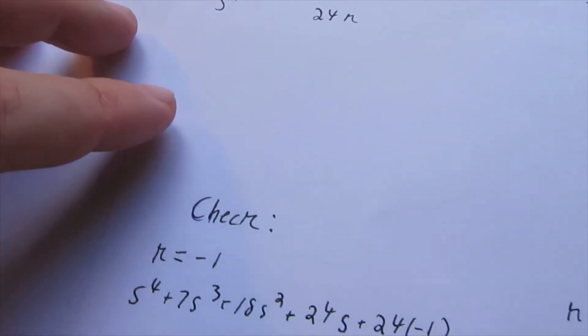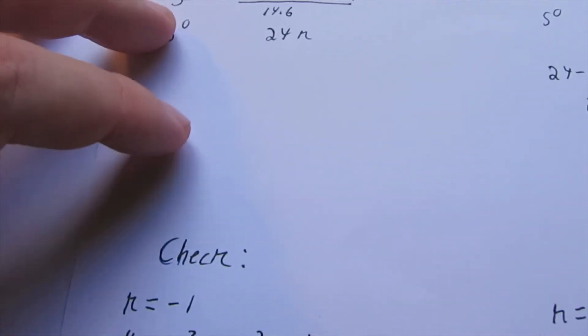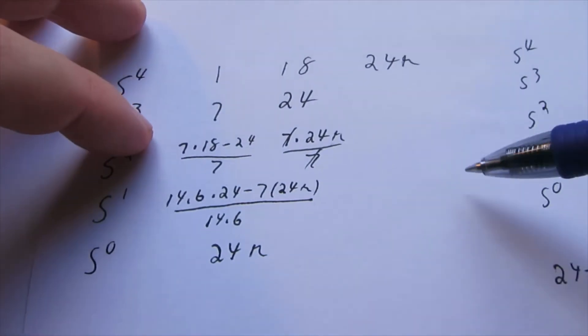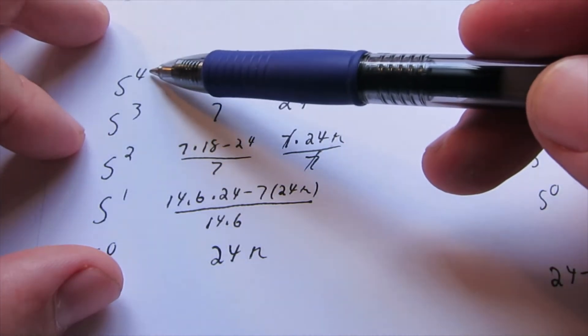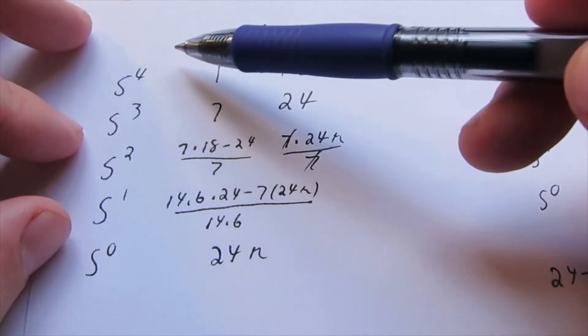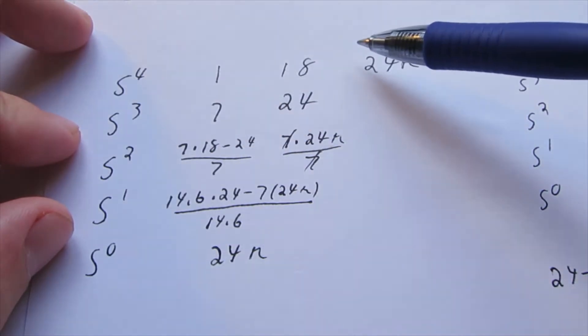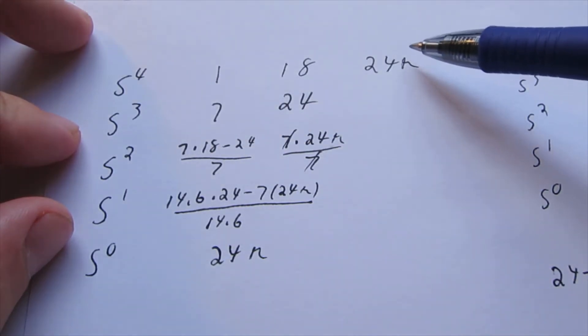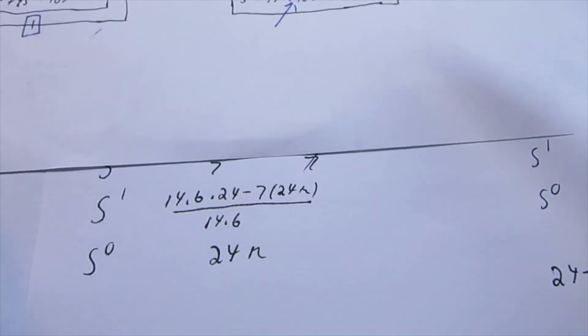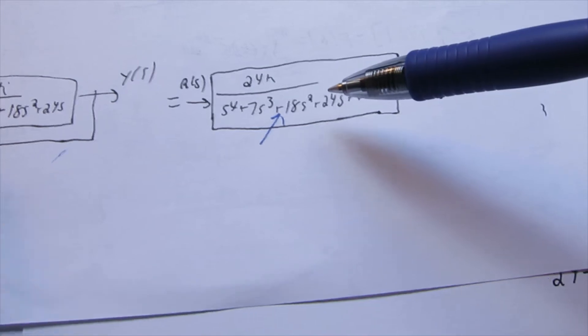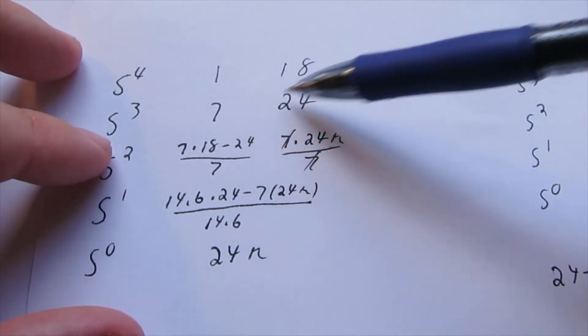So, draw that out. If you want to find out more about the Routh-Hurwitz criterion table, you can look up a separate video on that. But, I just did the math here. The way you break it down is you have your order of polynomial, and then do every other value. So, this is S to the fourth, 18S² plus 24K. Do the math.